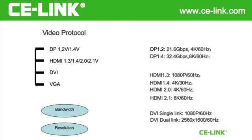The maximum resolution for HDMI 1.3 is 1080p 60Hz, for 1.4 it is 4K 30Hz, for 2.0 it is 4K 60Hz, and for the latest 2.1 it is 8K 60Hz.